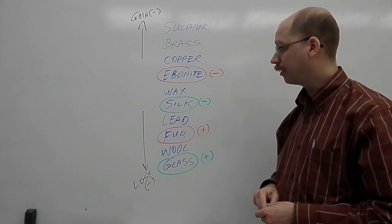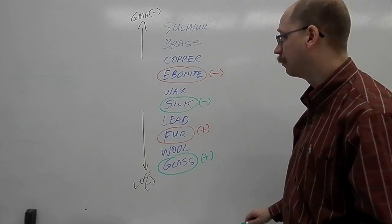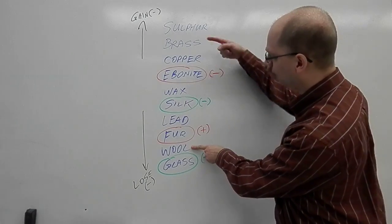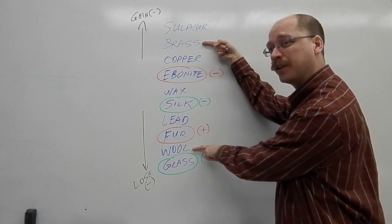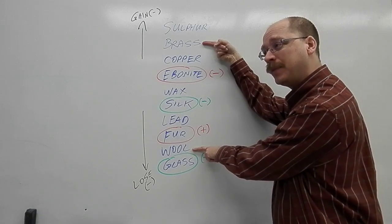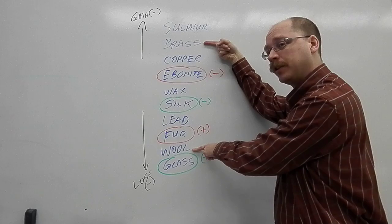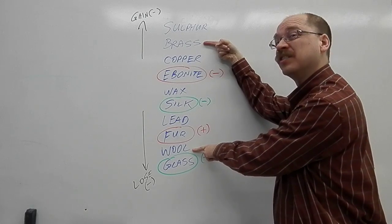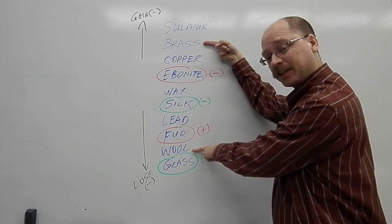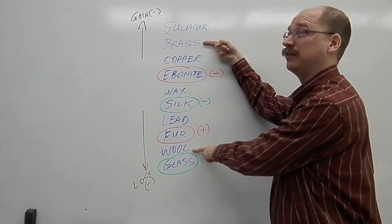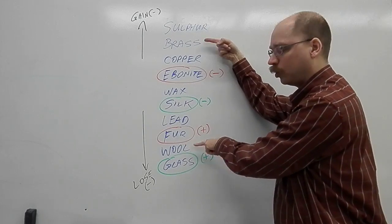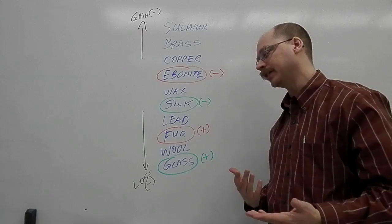Now that means if I went through a really extreme example, maybe rubbing wool with brass, they're really far apart on this electrostatic series. That means the difference between their ability to lose and gain electrons is pretty big. So the brass we would expect to become actually very negative and the wool very positive because of their extreme difference.